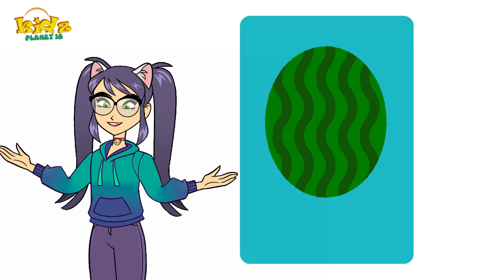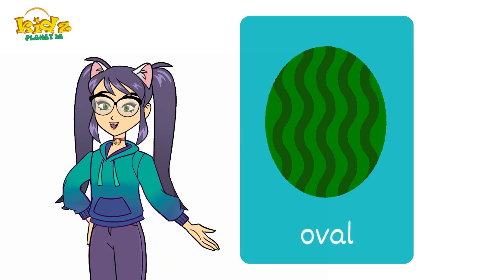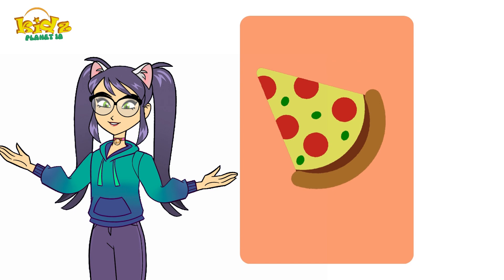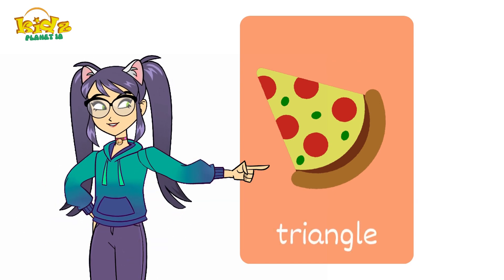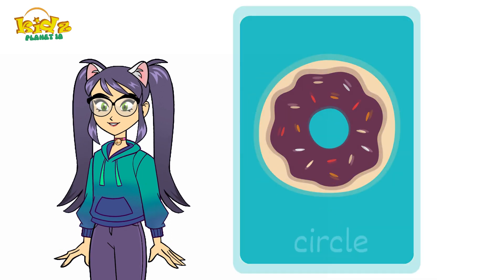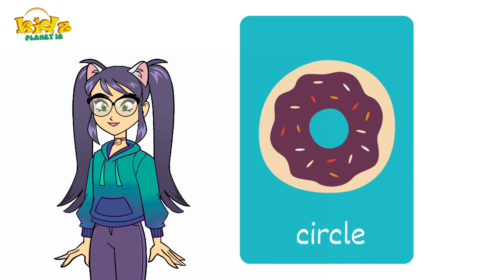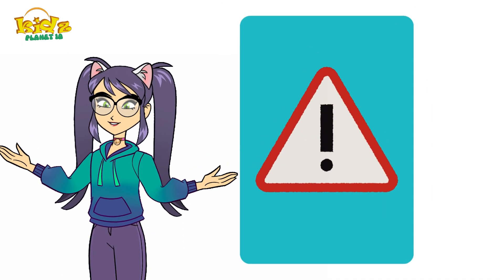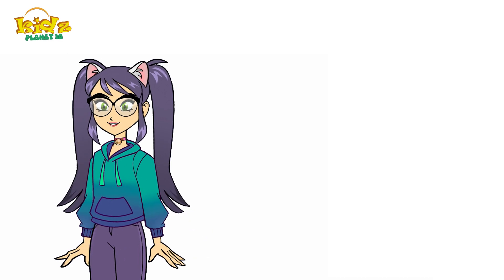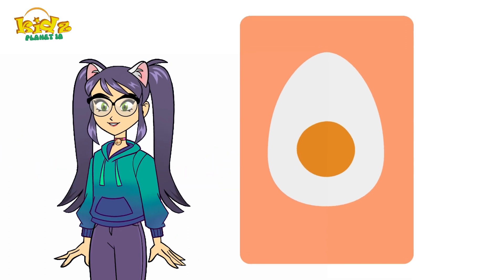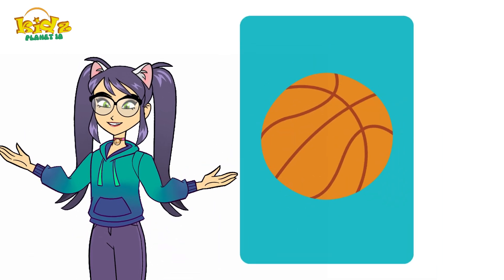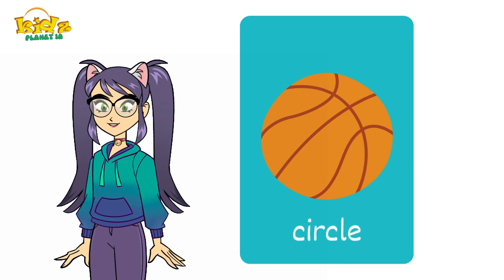Which shape is this? Oval. Which shape is this? Triangle. Which shape is this? Circle. Which shape is this? Triangle. Which shape is this? Oval.